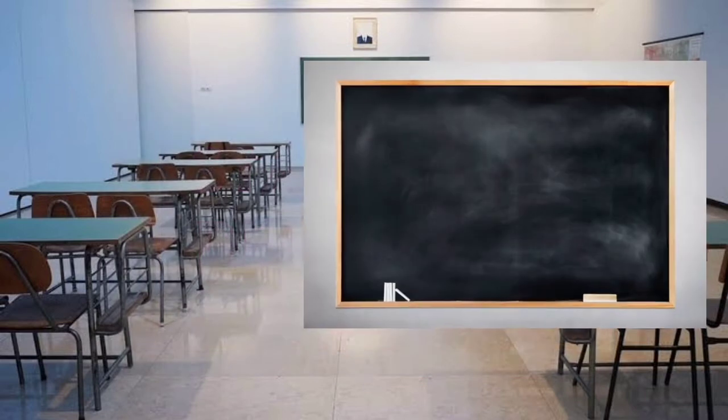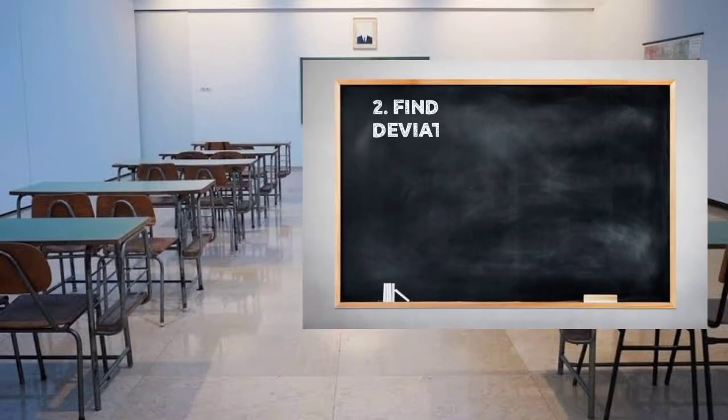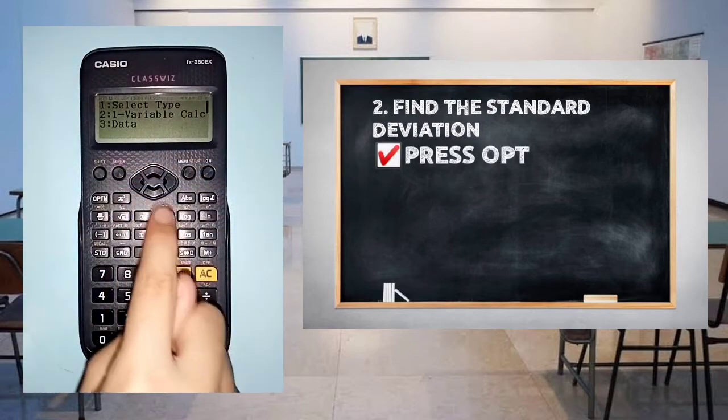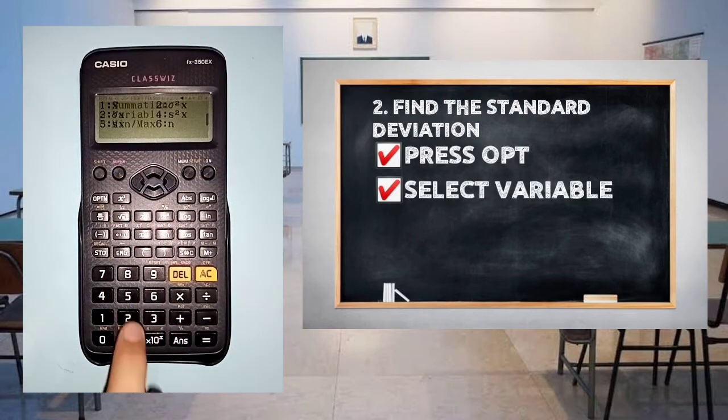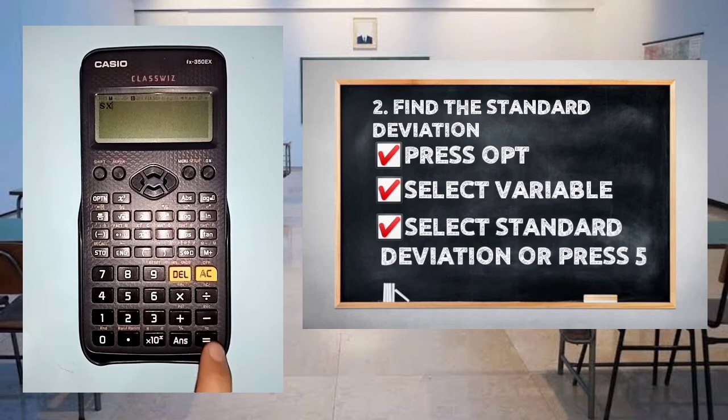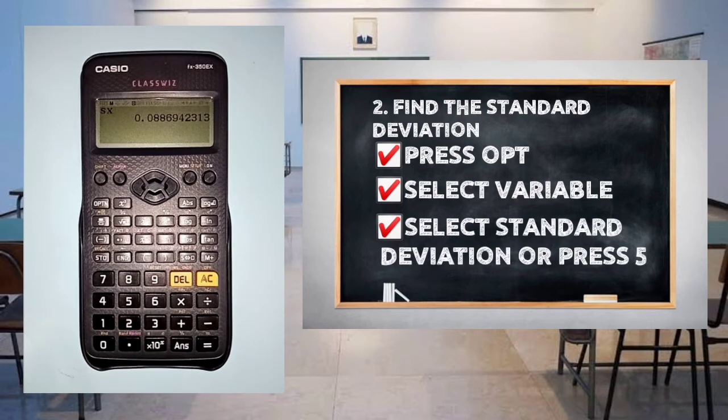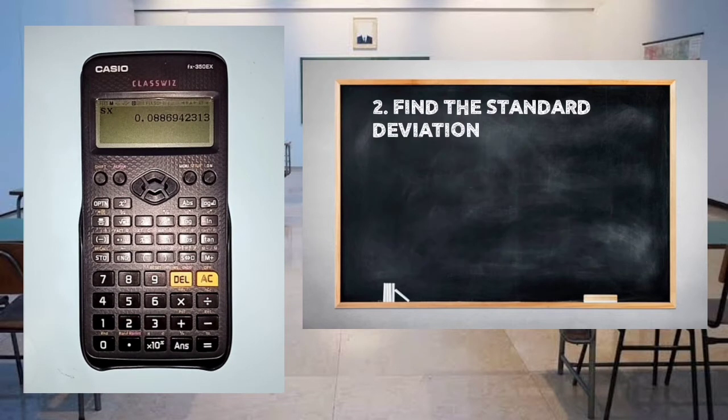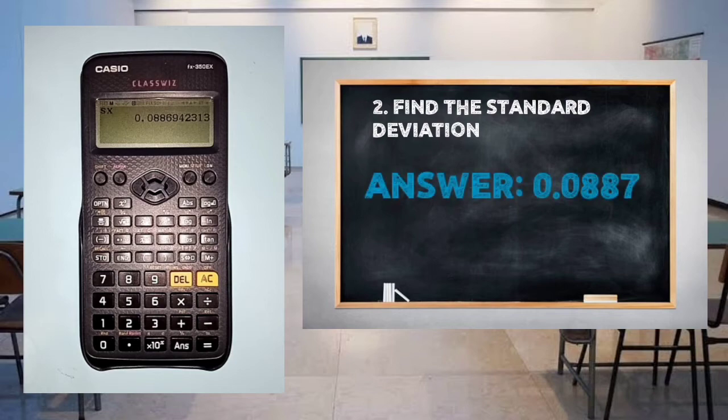For the second question, find the standard deviation. Press option, scroll down, and select variable. Next, select standard deviation or press 5. The final answer for standard deviation equals ±0.0887.